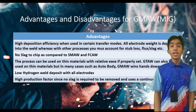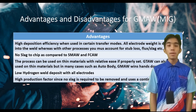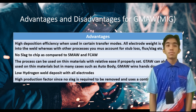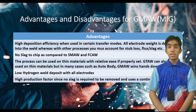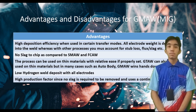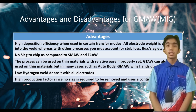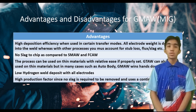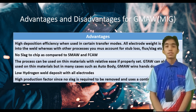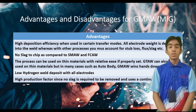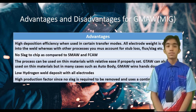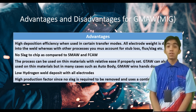The advantages of gas metal arc welding: high deposition efficiency when used in certain transfer modes — all electrode weight is deposited into the weld, whereas with other processes you must account for stub loss, flux slag, etc. No slag to chip, as compared to shielded metal arc welding and flux core arc welding. The process can be used on thin materials with relative ease if properly set. Low hydrogen weld. High production factor since no slag is required to be removed and it uses a continuous electrode.